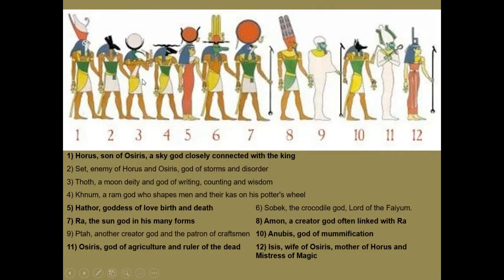We will quite frequently see Thoth, who is associated with writing, courtly deeds, and records of history. Hathor, number five, is the goddess of love, birth, and death. You'll also see Ra, the sun god, who appears in multiple different forms, most frequently as Amun-Ra. Number eleven is Osiris, the god of agriculture and also the land of the dead — very important.